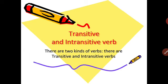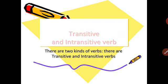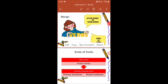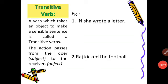Next, we will look into transitive and intransitive verbs. There are two kinds of verbs: transitive and intransitive verbs. A transitive verb is a verb which takes an object to make a sensible sentence. The action passes from the doer — the subject, the noun in the sentence — to the receiver, the object.